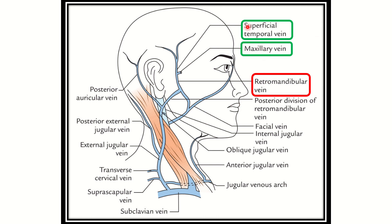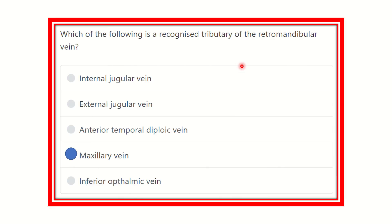Now we have to find out these two tributaries in the answer options. Among the options, only the maxillary vein is present — there is no superficial temporal vein listed. So the maxillary vein is the correct answer, as it is a tributary of the retromandibular vein.